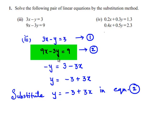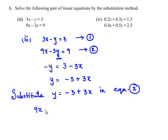So in place of y, let us substitute minus 3 plus 3x. That means the second equation becomes 9x minus 3 times of y, which can be written as minus 3 plus 3x, and this is equal to 9.